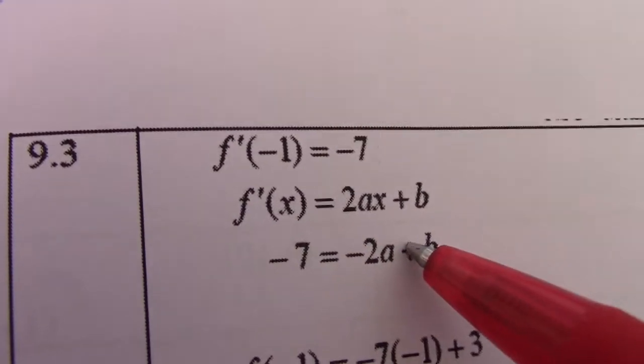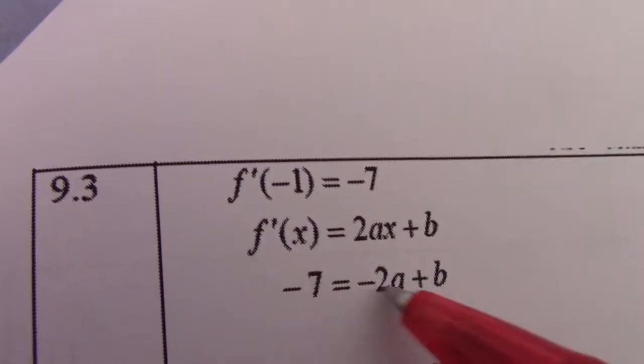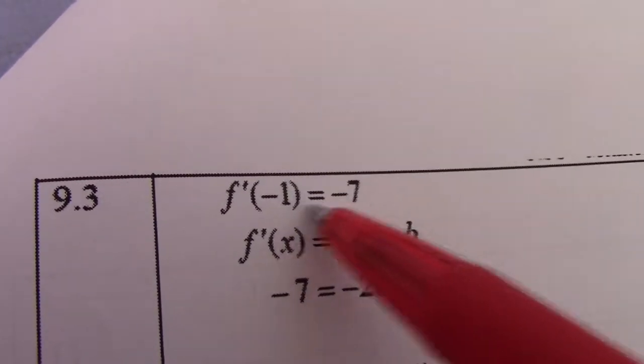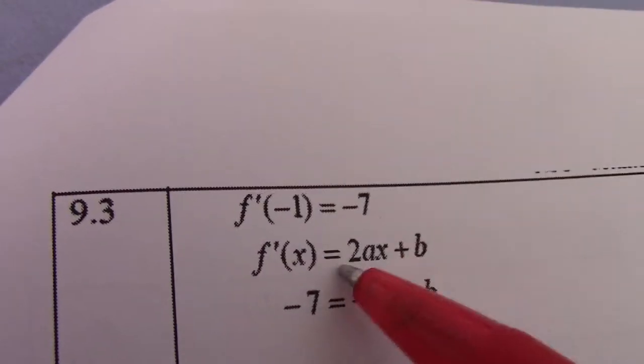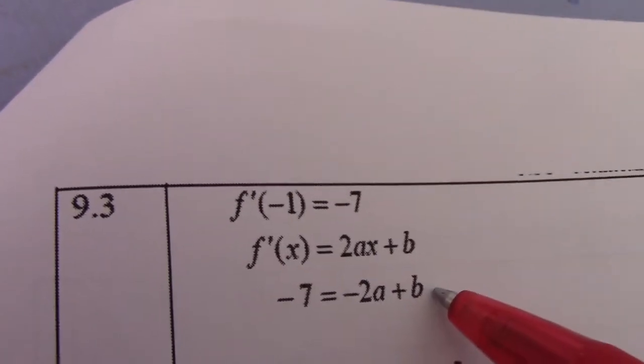Right, there, -7 = -2a + b, where x becomes -1. So -1 times 2a becomes -2a and b stays b.